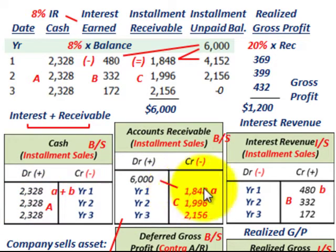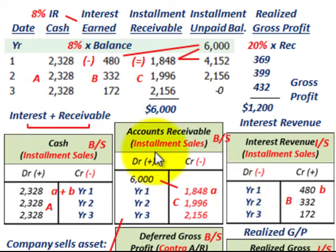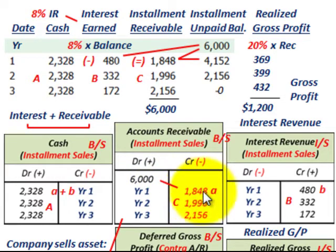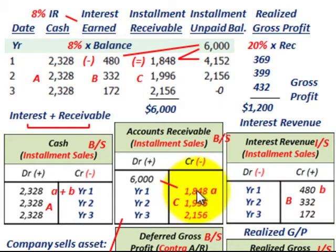We received $2,328 of cash, so the debit goes to cash. But the receivable reduction — the principal amount — was $1,848. We also have interest revenue: for year one, that's a credit of $480. So the two credits — the $1,848 reduction in accounts receivable plus the $480 of interest revenue — balance with the debit of $2,328 to cash. That takes care of the receivables on our installment contract.